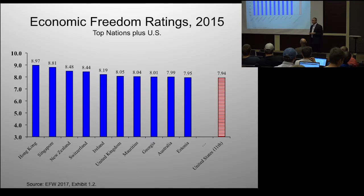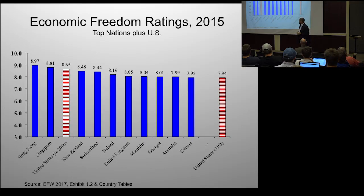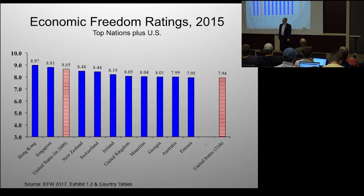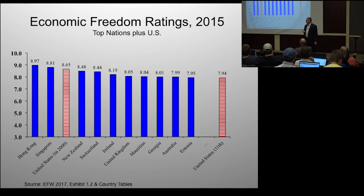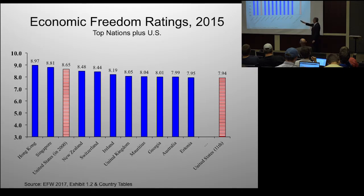There are a couple of strange countries on there — you'll notice former Soviet republics like Georgia and Estonia, and Mauritius, a tiny island in the Indian Ocean. The United States is currently ranked 11th, up from 16th, with a rating of 7.94. If I go back to 2000, the United States had a score of 8.65 on our 10-point scale. So the U.S. has gone down by about 7 tenths of a point — that's almost a complete standard deviation decline. The U.S. has gone down in economic freedom in ranking from third to 11th. Other rankings: Germany 23rd, France 52nd. Venezuela is 159th — last.